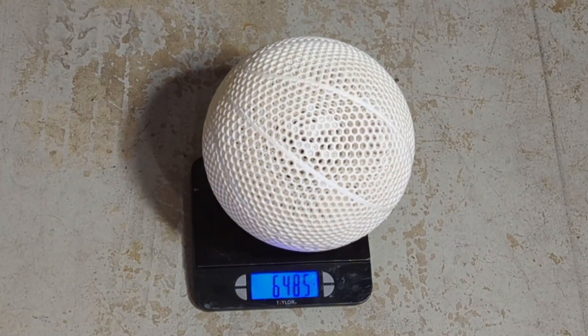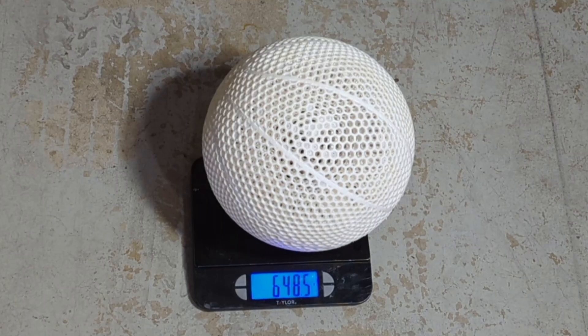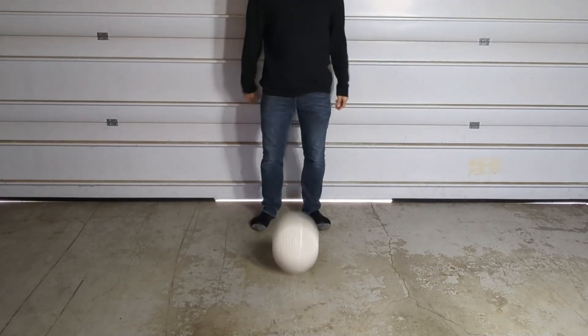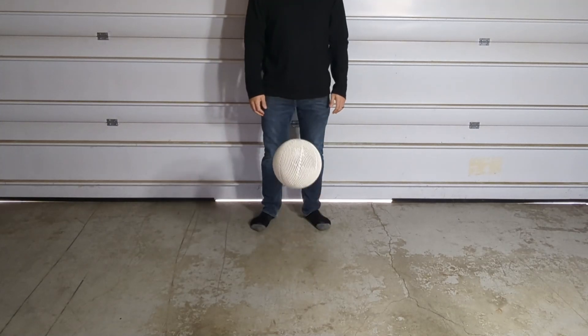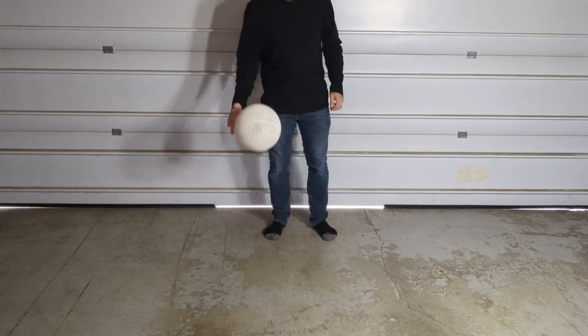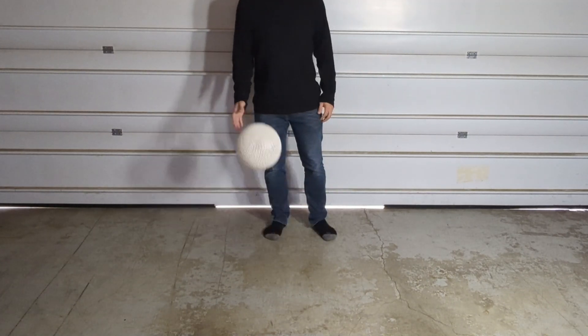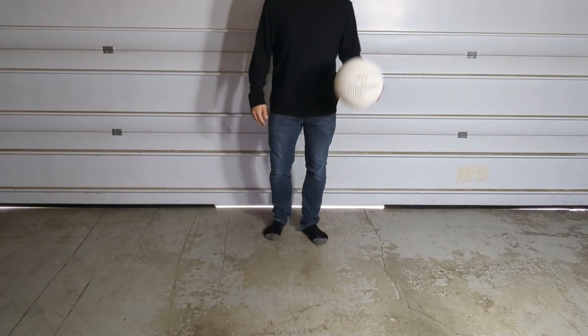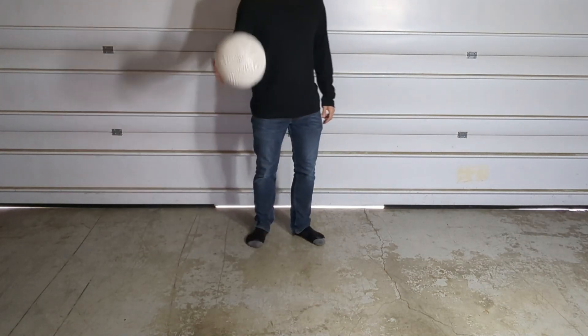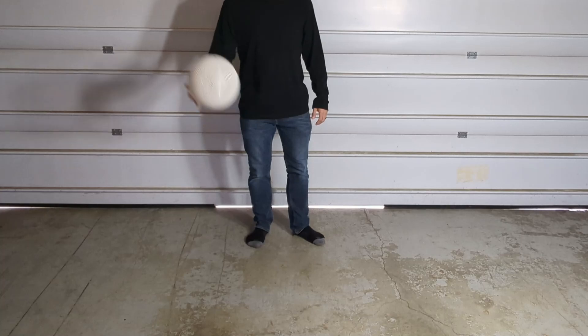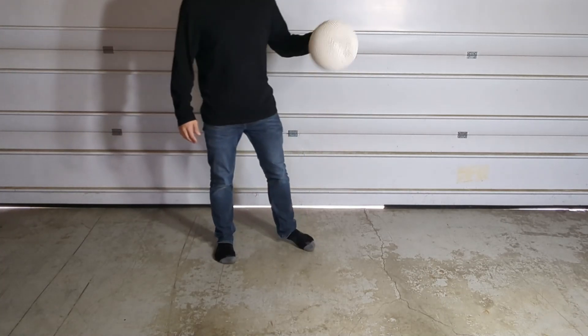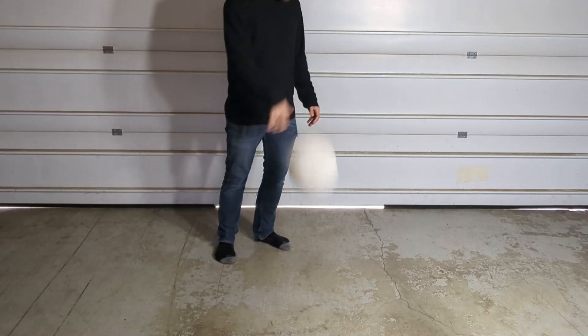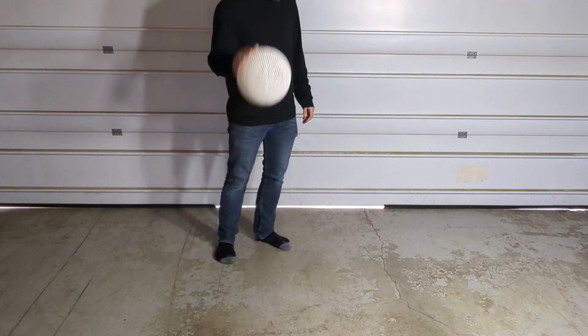It ended up weighing about 648 grams. It held up pretty well after the first couple of bounces, but the thing that I noticed right away is that it is incredibly loud. Every time you bounce it, it just echoed all over the place, and I think it's even louder than a regular basketball. It felt like it bounced pretty well as I was bouncing it, so I thought it'd be worth trying to compare it against some of the other filaments that I've made airless basketballs out of.